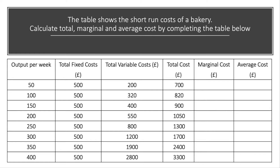So total costs, for example, of producing 50 baguettes per week, rises from £500 to £700 if they produce the first batch of 50, and so on. And the costs rise not necessarily in proportion to output, but there's a change in total cost as output increases.